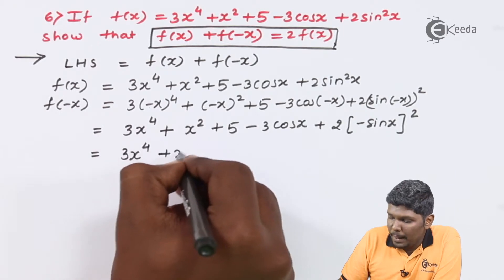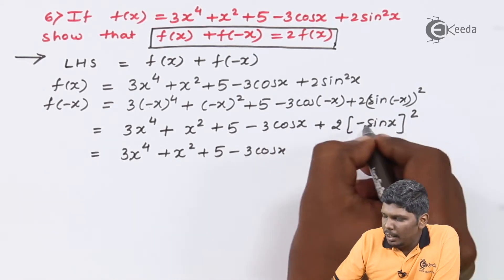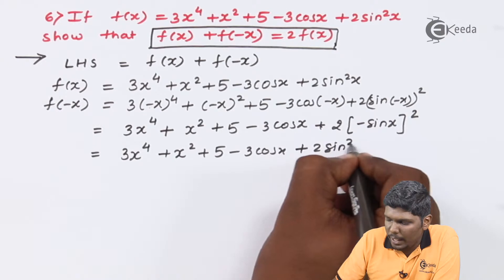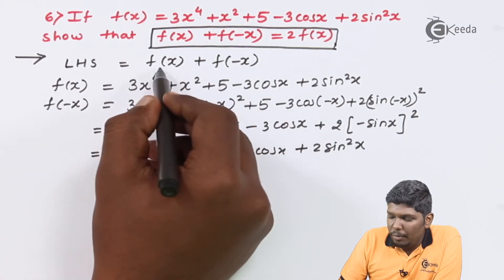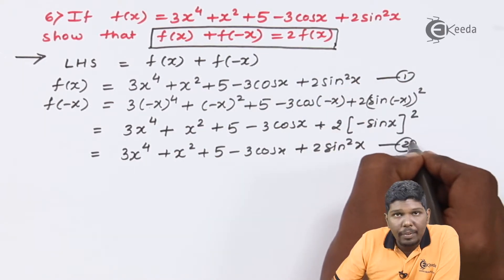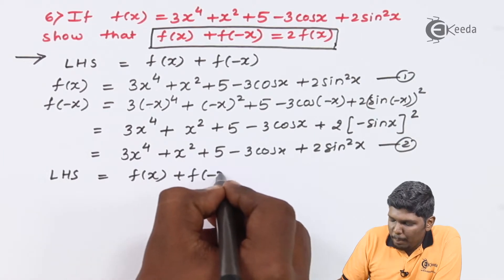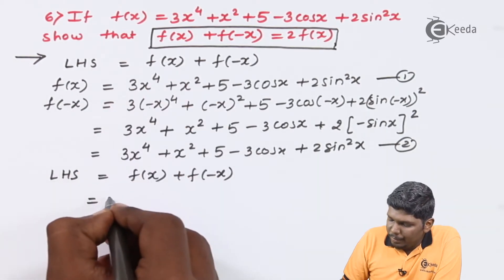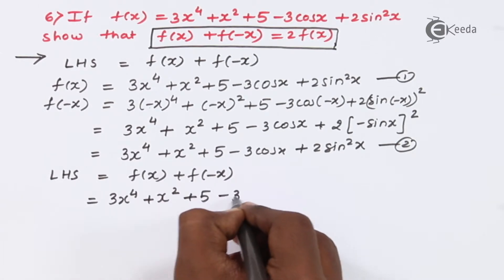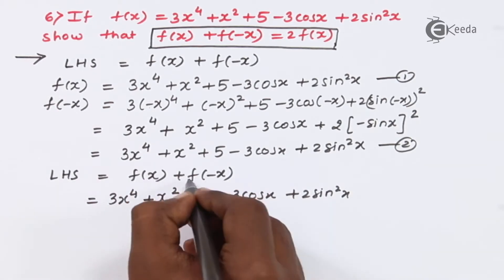On further solving, f(-x) becomes 3x raised to 4 plus x squared plus 5 minus 3cos(x) plus 2sin²(x). Note that minus squared again gives positive, so the sine squared term becomes positive 2sin²(x). So f(-x) simplifies to exactly the same form. We label f(x) as equation 1 and f(-x) as equation 2, then substitute into LHS.